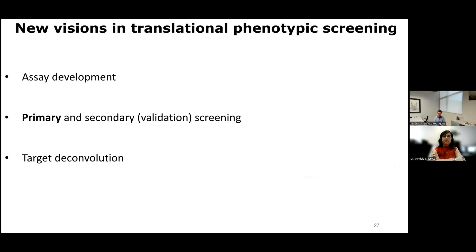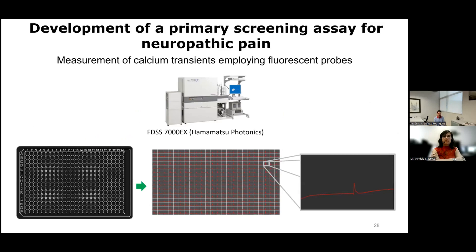Employing F11 cells, we developed a primary screening method in 384-well plates, employing fluorescent probes to detect intracellular calcium concentration, in a Hamamatsu FDSS-7000EX. We performed this primary screening looking for drugs that counteracted the increase in excitability induced by lesions affecting peripheral nerves.